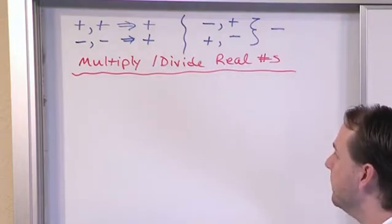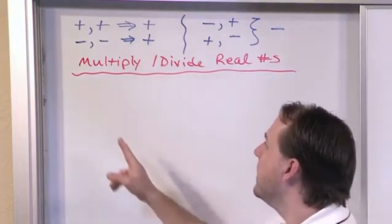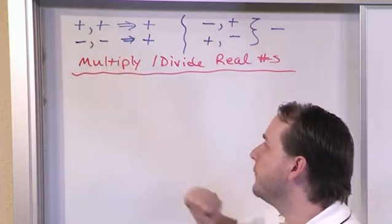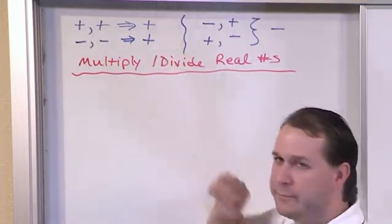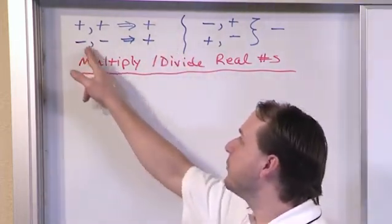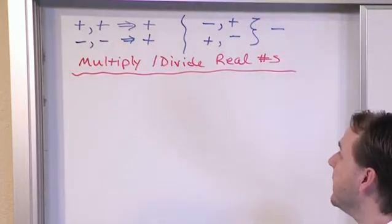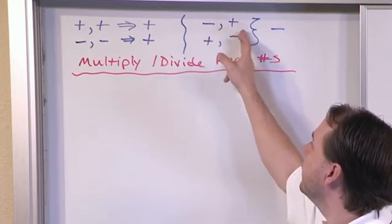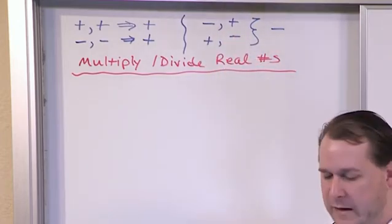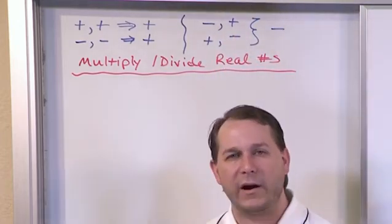So just to recap one more time: positive number multiplied or divided by a positive number always gives you a positive number. Negative number multiplied or divided by another negative number is always going to give you a positive number. And then when they're different signs you're always going to get negative numbers. I really think that the easiest way to get practice...